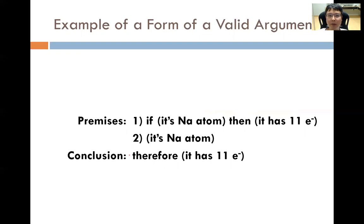Another example of a valid argument form: Premise 1 — if it is the sodium atom, then it has 11 electrons. Premise 2 — it is the sodium atom. Conclusion — therefore it has 11 electrons. If you look at the form: 'it is the sodium atom' is statement P, 'it has 11 electrons' is statement Q. It is indeed in the form of 'if P then Q, P therefore Q', and therefore this is also a valid argument. All we have to discuss is whether Premise 1 and Premise 2 are true.